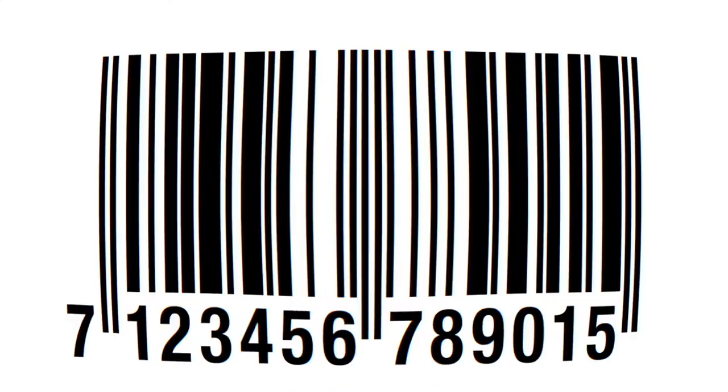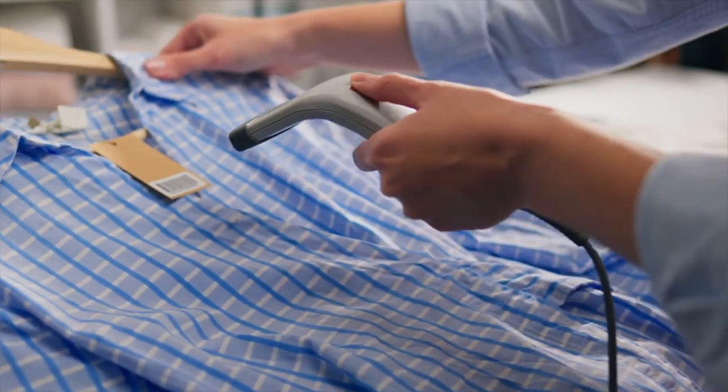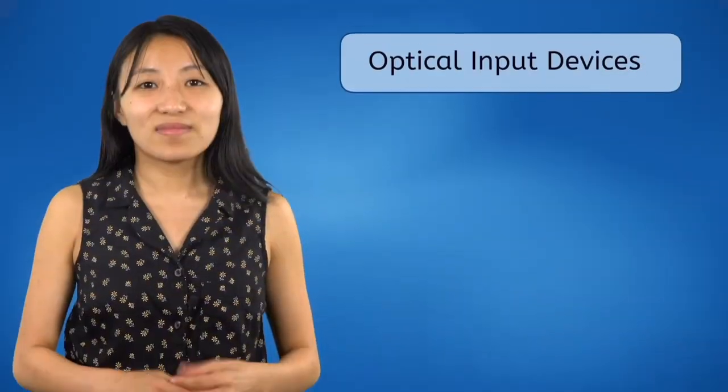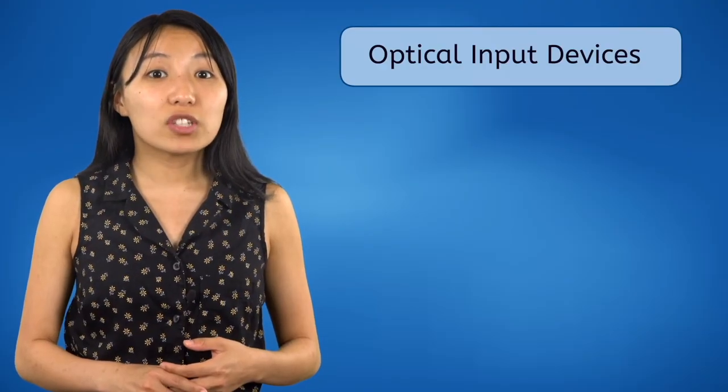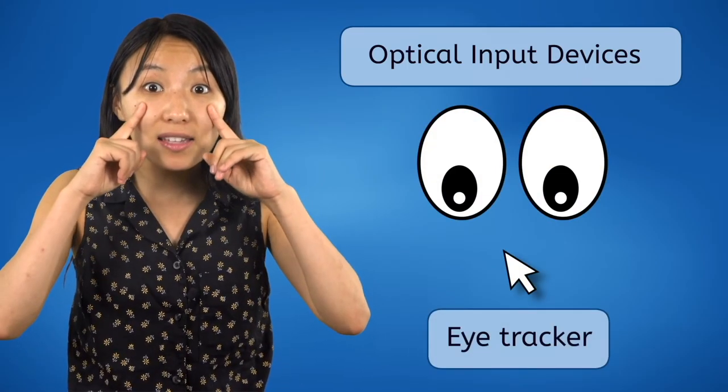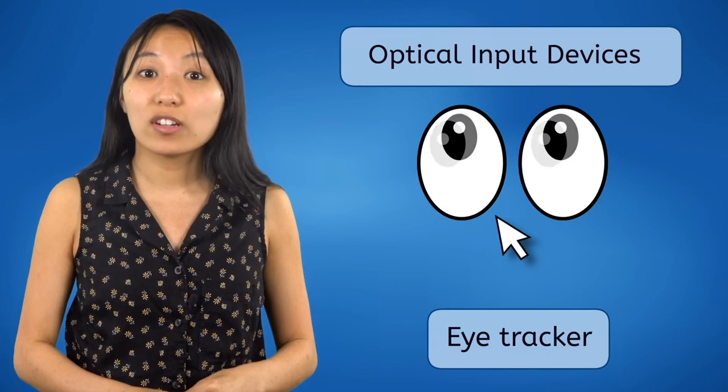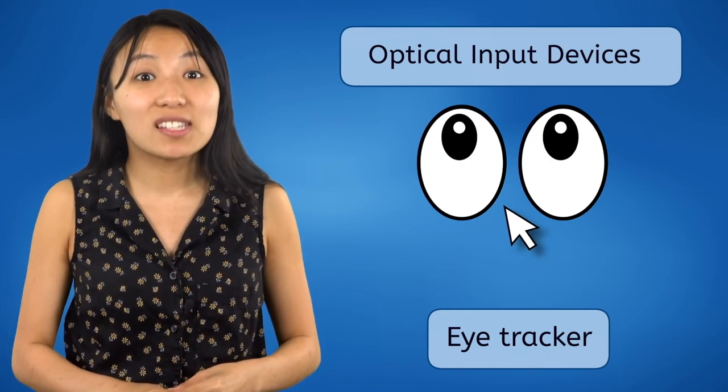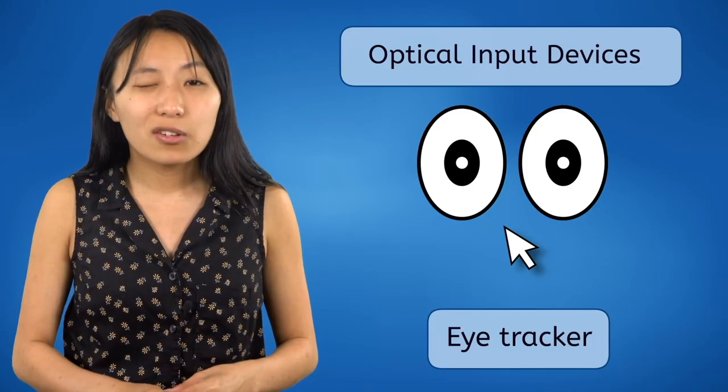In stores and other businesses, special scanners are used which read a barcode in order to bring up data about specific items and keep track of inventory. There are even special visual input devices that allow you to control a computer completely with your eyes. Eye trackers use a camera sensor to track exactly where on a screen your eyes are looking. And to click, you either stare at the thing you want to click on or use special blinks or winks.